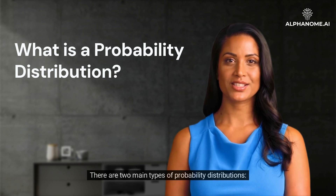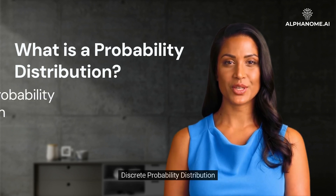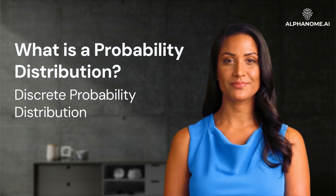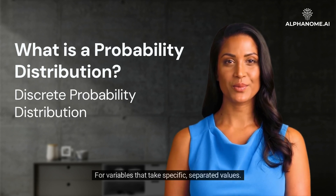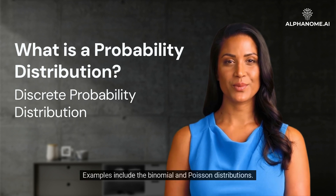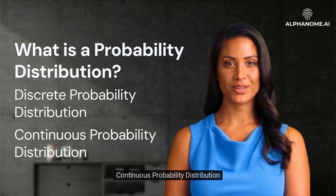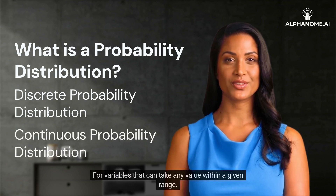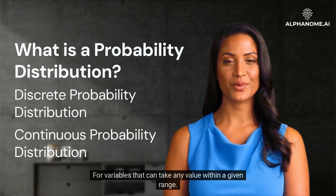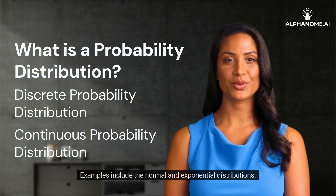There are two main types of probability distributions. Discrete Probability Distribution: for variables that take specific, separated values — examples include the binomial and Poisson distributions. Continuous Probability Distribution: for variables that can take any value within a given range — examples include the normal and exponential distributions.